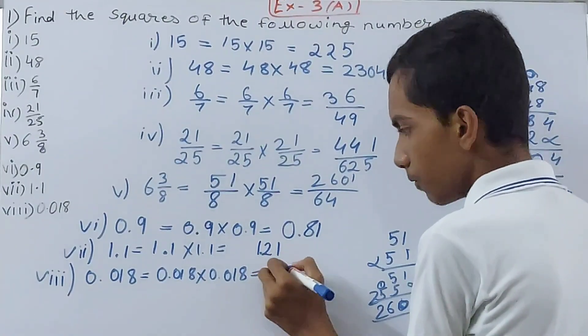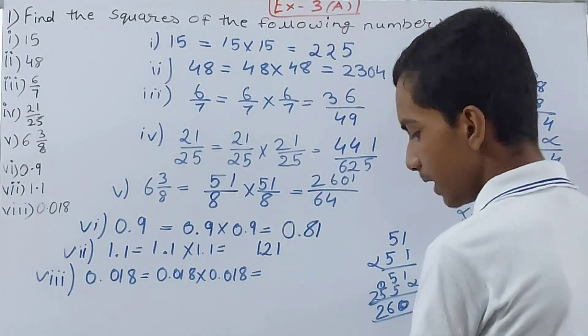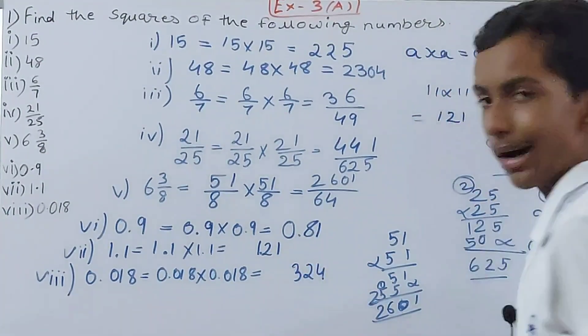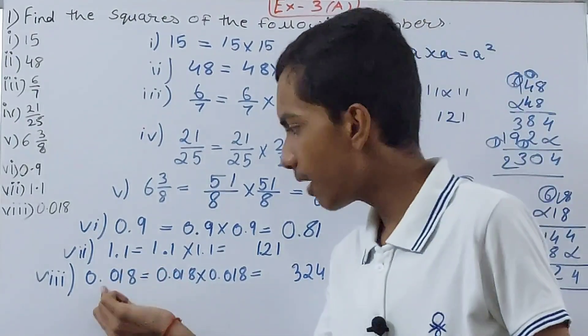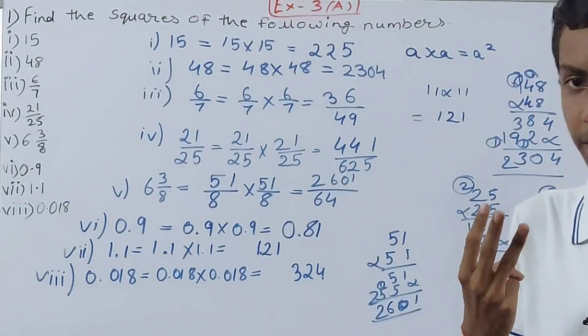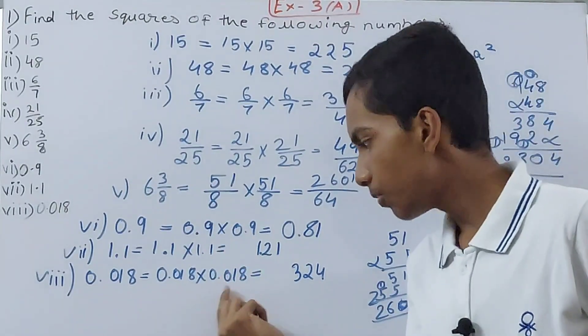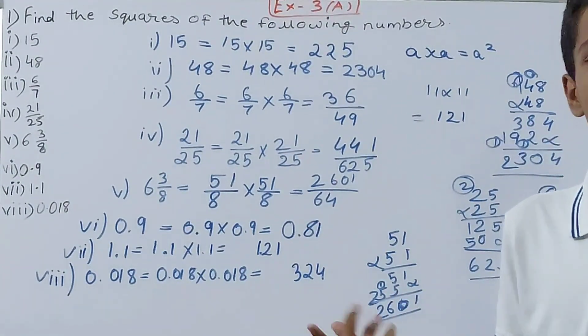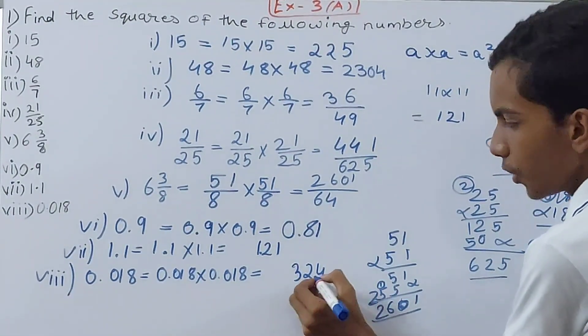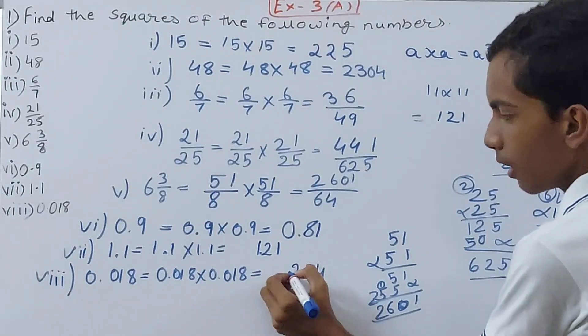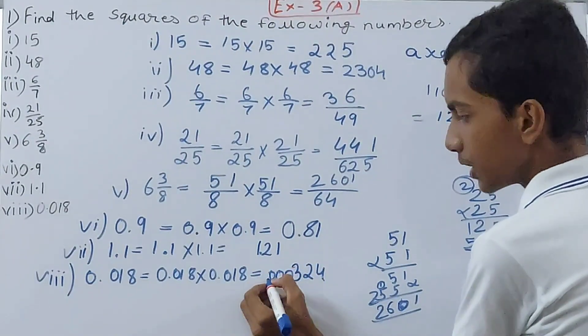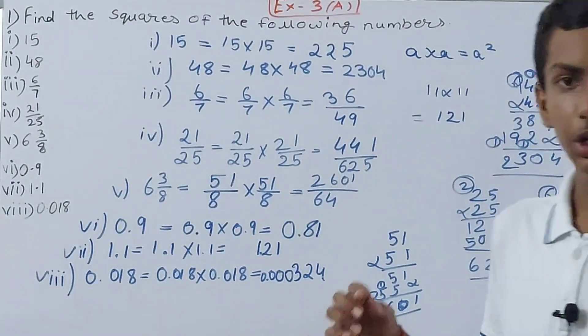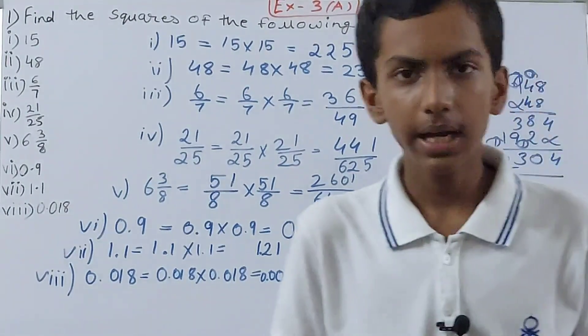Let's leave some space because many decimals are there. So 324. Now count number of decimal places. Here we have 1, 2, 3 - three decimals after 3 places. Then again 1, 2, 3 - after 3 decimal places. In total how many decimal places? 3 plus 3 is 6. So 1, 2, 3, 4, 5, and 6. Here we will put the decimal: 0.000324. That becomes our answer.